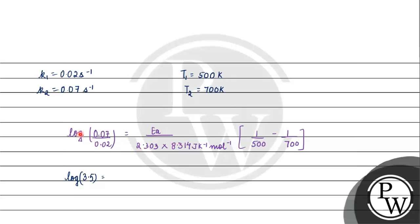If we cross multiply, we get log 3.5 into 2.303 into 8.314 joule per kelvin per mole equals Ea. We'll solve this: 700 minus 500 by 700 into 500. So Ea will ultimately be 700 into 500 into log 3.5 into 2.303 into 8.314 joule per kelvin per mole.